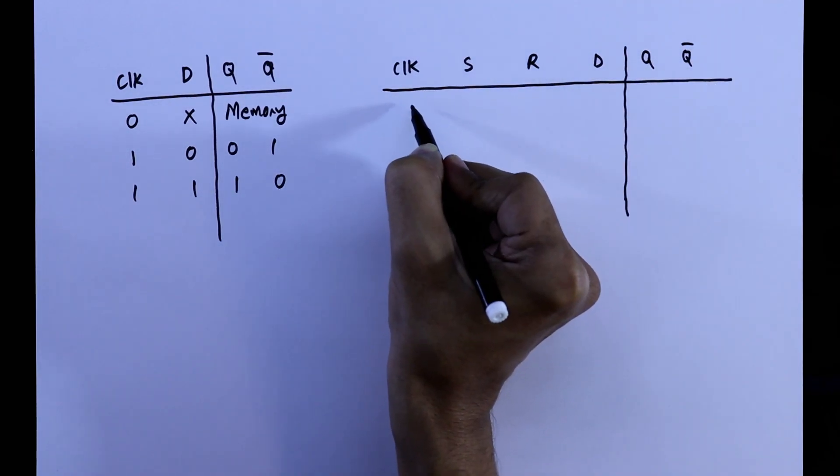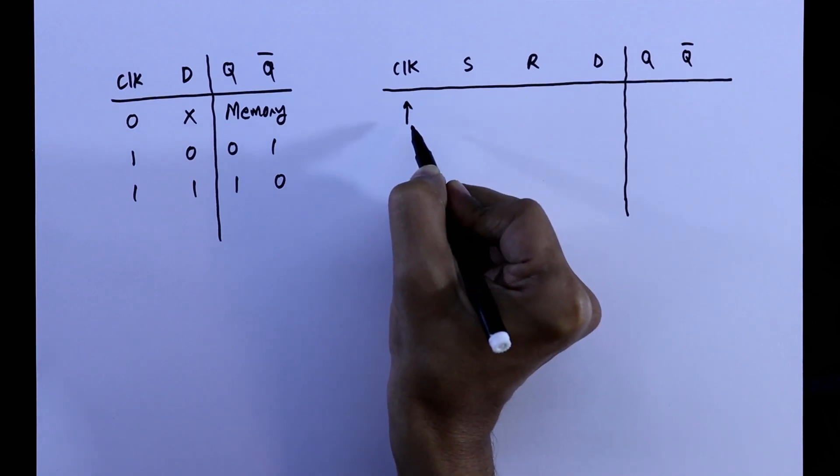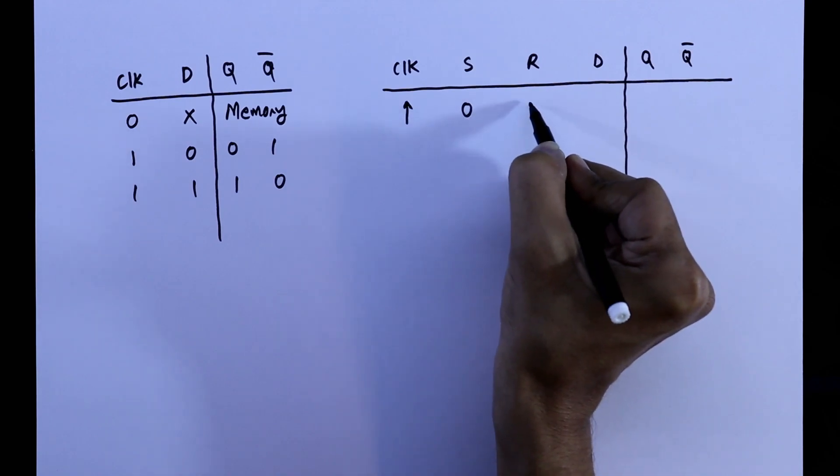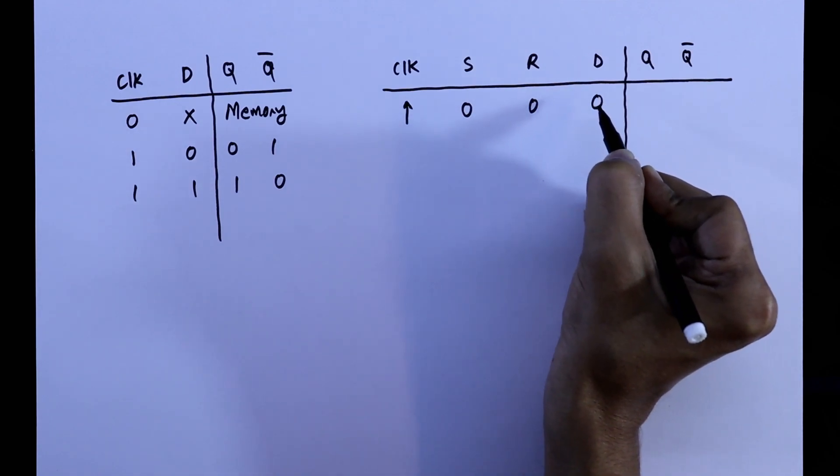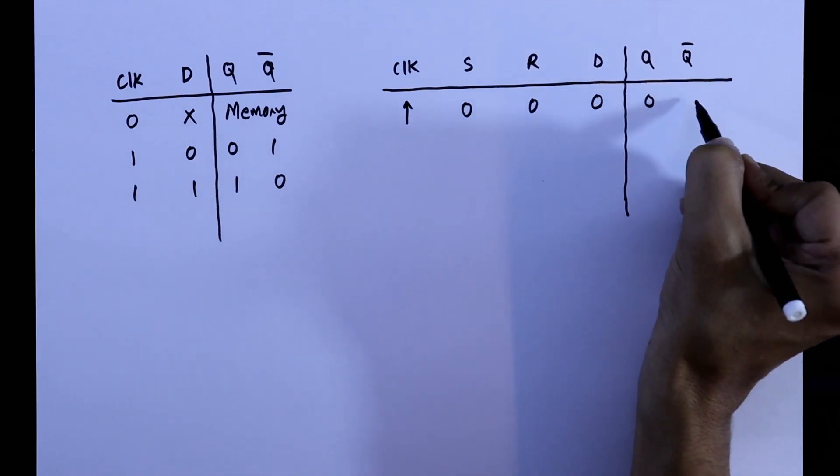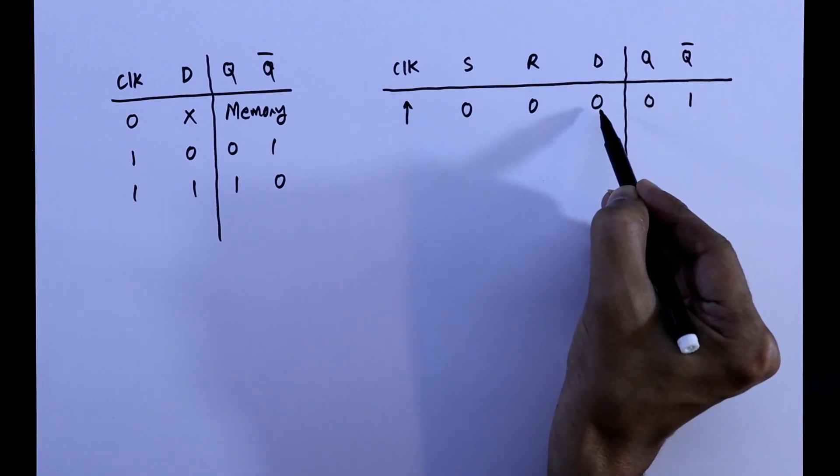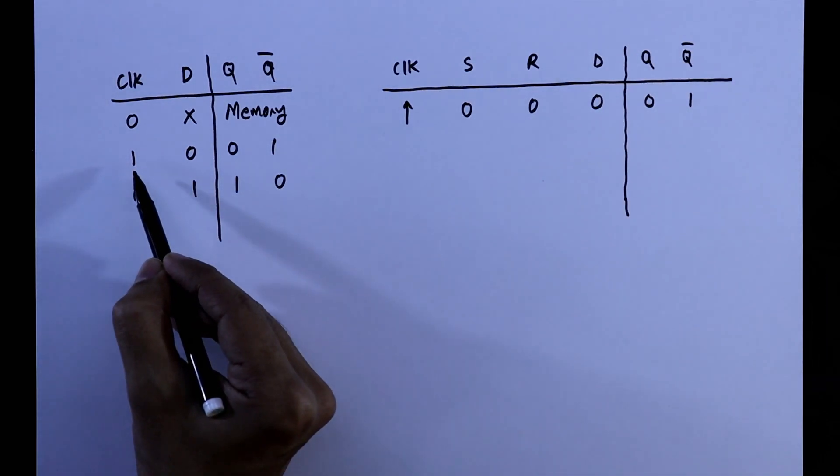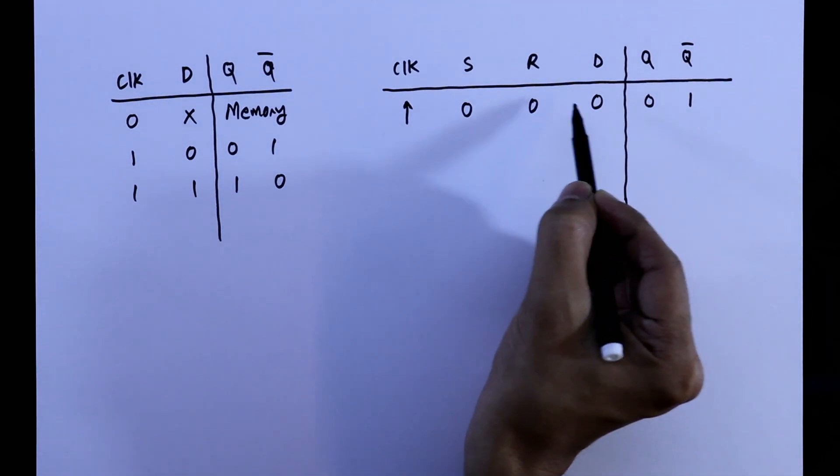When clock is from 0 to 1, that is 0 to 1 and other 3 is 0, then we will get Q as 0 and Q bar as 1 because D is 0, so Q bar will be 1 as we are getting this. This is same as this one.